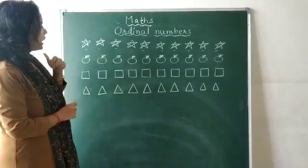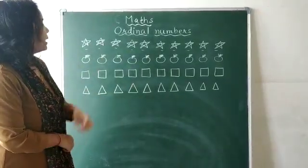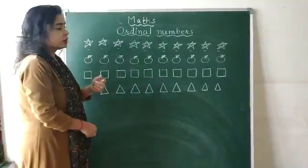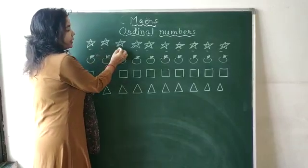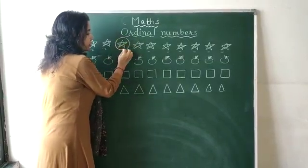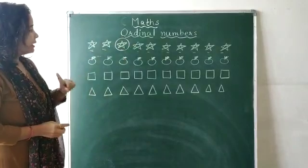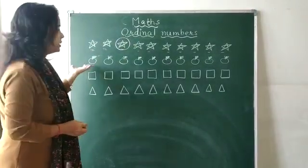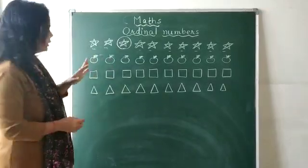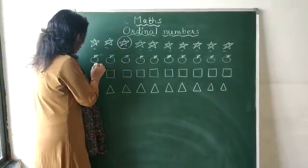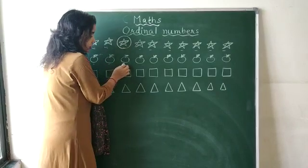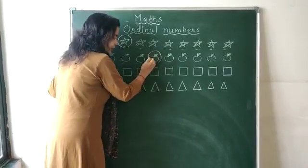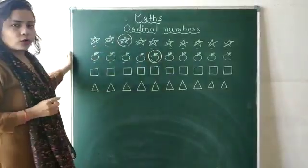So, if I will say mark the 3rd star, then how we will count? 1st, 2nd and 3rd. Okay? Likewise, if I will say mark the 5th apple, so 1st, 2nd, 3rd, 4th and yes, this is 5th.